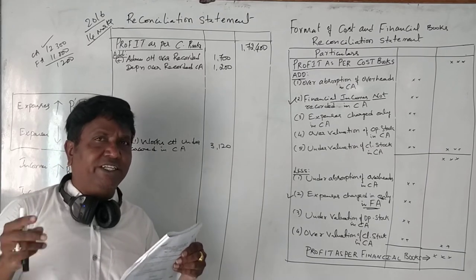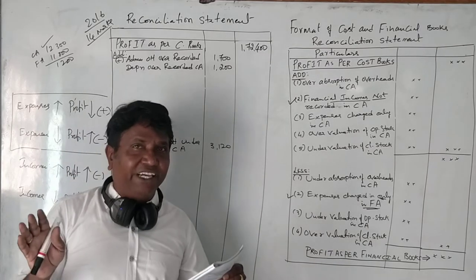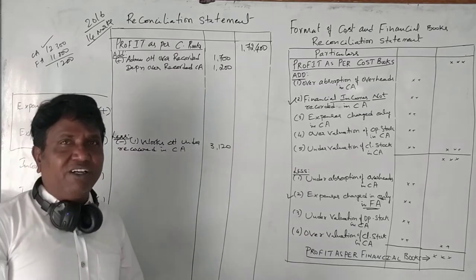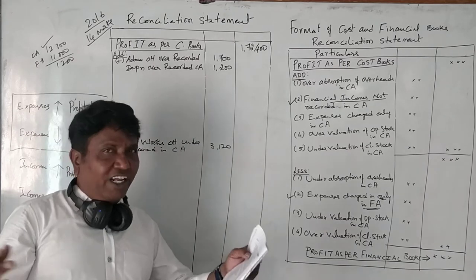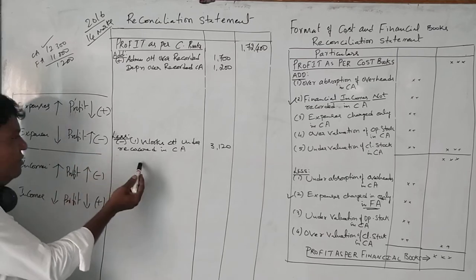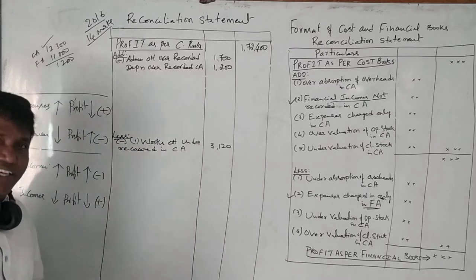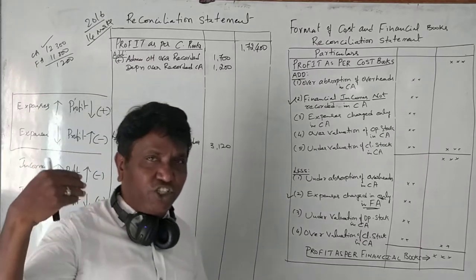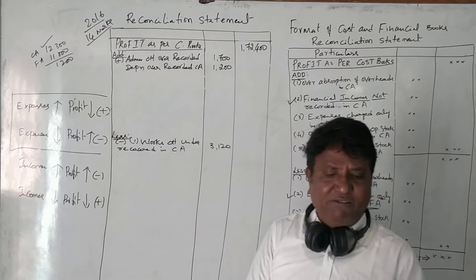Whenever depreciation charged in financial accounts is given, depreciation in cost accounting will also be given. Suppose it is not given — we assume depreciation is charged only in financial accounting and not in cost accounting. If any expense is recorded less, profit will show more, so we would minus it. But here depreciation is given in both CA and FA. Since depreciation in CA is charged more — over-absorbed — 1,200 rupees is added.